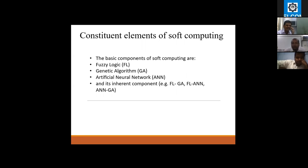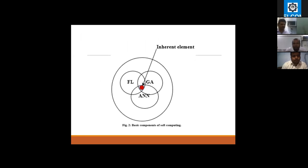What are the constituent elements of soft computing? The basic soft computing belongs to fuzzy logic (FL), second is genetic algorithm (GA), and third is artificial neural network (ANN). These components are FL-GA, FL-ANN, and ANN-GA. These are basic components of soft computing.